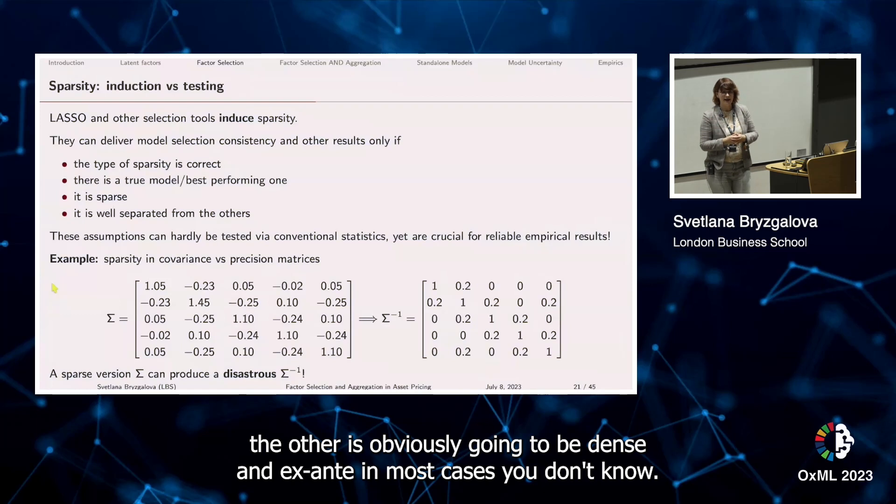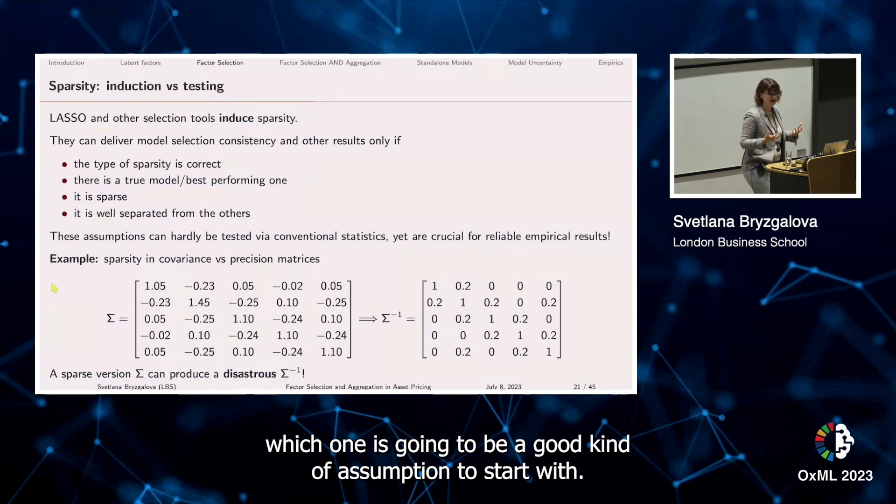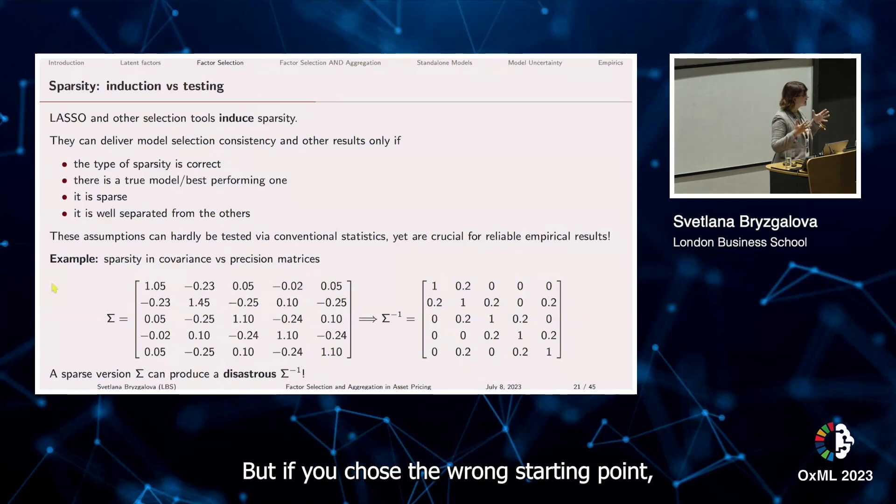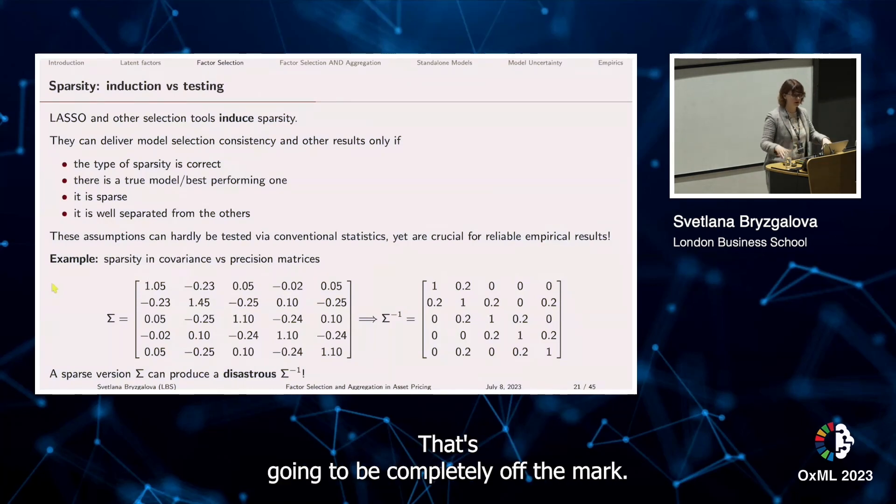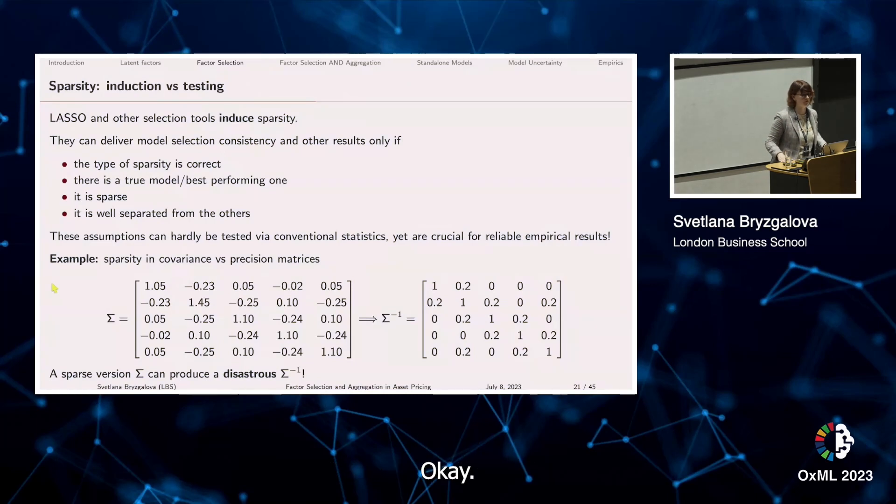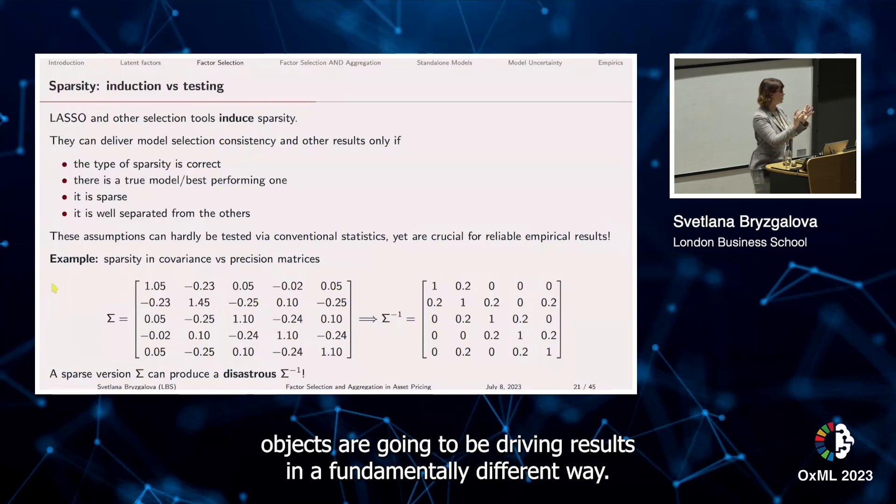Ex ante, in most cases you don't know which one is going to be roughly sparse, which one is going to be a good assumption to start with. But if you choose the wrong starting point, you're going to end up with the inverse of the matrix that's going to be completely off the mark. So sometimes sparsity in even very related objects is going to be driving results in a fundamentally different way.